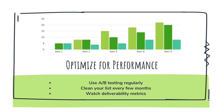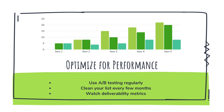Even the best campaigns can always improve. Start by running A/B tests regularly — this could be as simple as testing subject lines, or as advanced as testing email layouts, send times, or incentives. Also, be sure to clean your list every few months — remove inactive contacts or those who haven't engaged in 90 days. This keeps your deliverability high and your open rates healthy. Keep an eye on deliverability metrics: bounce rates, spam complaints, and unsubscribes. If any of those spike, it's a sign to adjust your content or frequency.